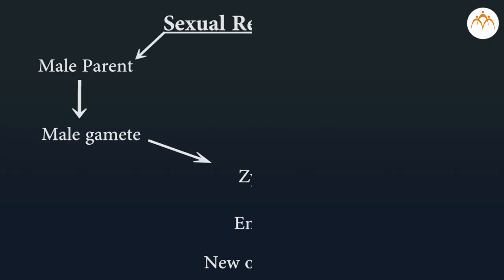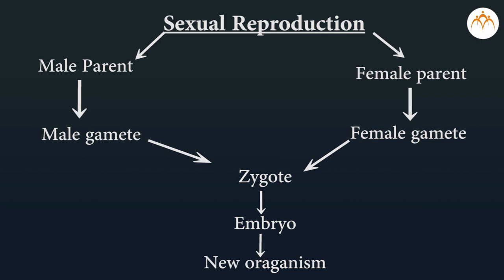Now let's study sexual reproduction, the process that occurs in higher plants and animals. The process involves the following steps: male and female parents produce gametes by meiosis; gametes unite or fuse to form a zygote — this is called fertilization; the zygote is the first cell of the next generation; it divides to form an embryo; and finally a new organism is formed from the cells of the embryo.